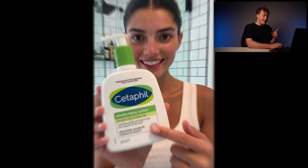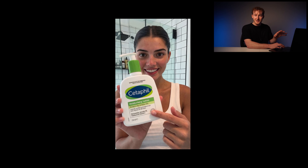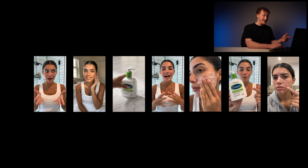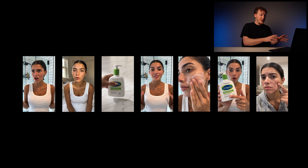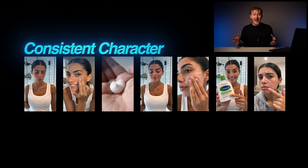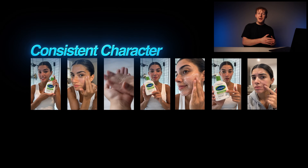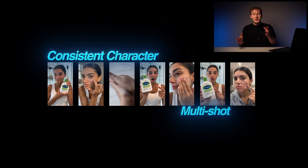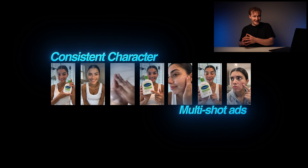You can also take one image of a person and show them in a different scene to create videos with a consistent character and to create multi-shot ads — and that is just scratching the surface.